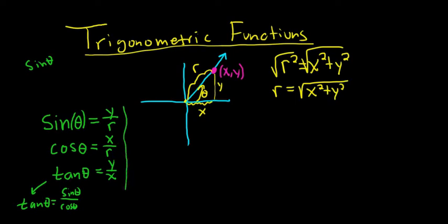If you flip these, if you look at the reciprocal of these functions, you get, in this case, the cosecant function. Cosecant of theta is r over y. So basically, it's the reciprocal of sine. So this would mean that the cosecant of theta is 1 over sine.